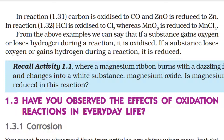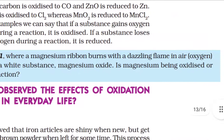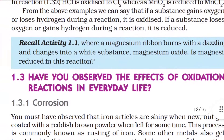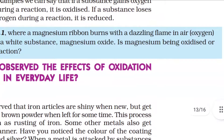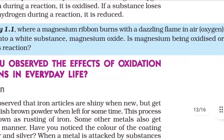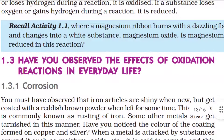From the above examples, we can say that if a substance gains oxygen or loses hydrogen during a reaction, it is oxidized. If a substance loses oxygen or gains hydrogen during a reaction, it is reduced. Recall Activity 1.1 where a magnesium ribbon burns with a dazzling flame in air (oxygen) and changes into a white substance, magnesium oxide. Magnesium is being oxidized in this reaction because oxygen is added to it.